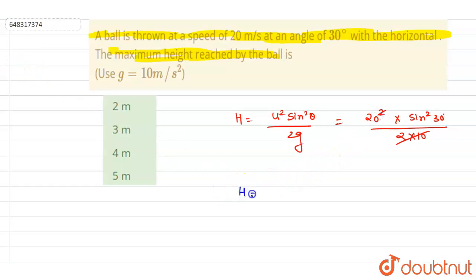Now if you see, H will be equals to 20 into sine squared theta, so it is 1 by 4.